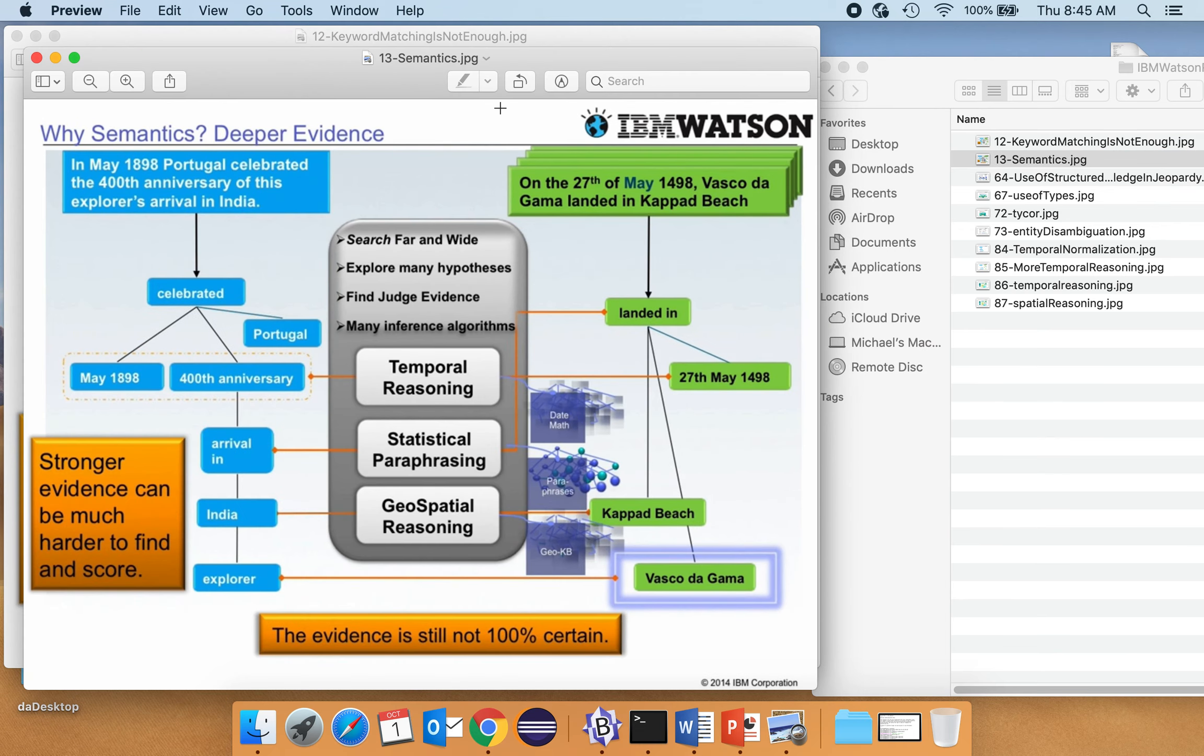So what they're doing is they're using in essence, in addition to other forms of inference, three kinds of reasoning: temporal, geospatial, and statistical paraphrasing. So temporal, we talked about that a little bit, they do some math on the 400th anniversary, and so they realized that we have to go back in time. And so suddenly we're at 1498, which matches up with this one, and we're matching May with May. So that's temporal reasoning. Not brain surgery, but still needs to be done and they got it done.